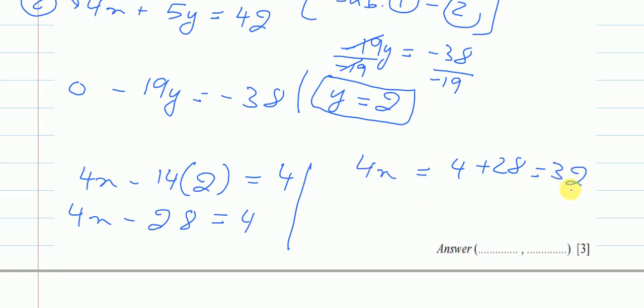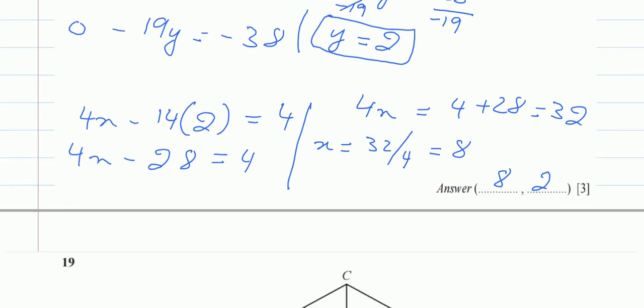4 will be divided over here. Finally, it will be 32 over 4, which is 8. So I found my x and I found my y. So this is my coordinates.